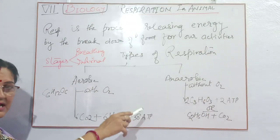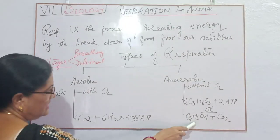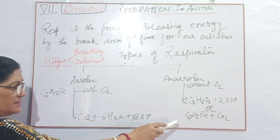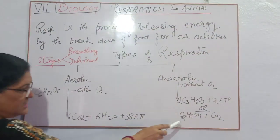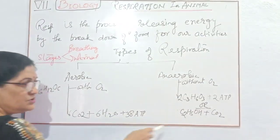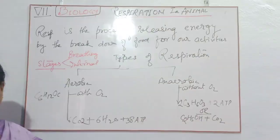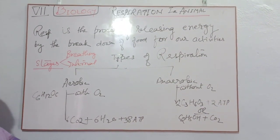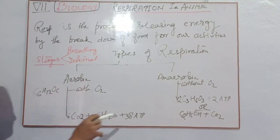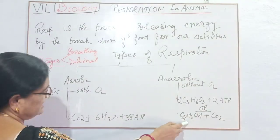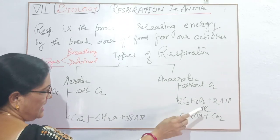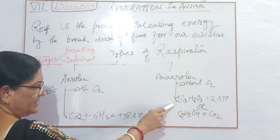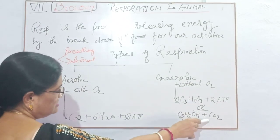In plant cells, glucose is decomposed into ethyl alcohol or ethanol and carbon dioxide. This anaerobic respiration in plant cells is also called fermentation. This process is used to make dhokla and other fluffy food items. Plant cells also release two molecules of ATP, but in animal cells there is no release of CO2.